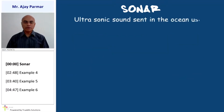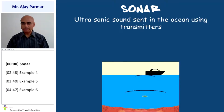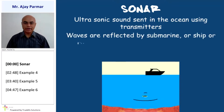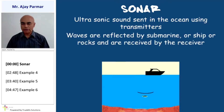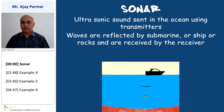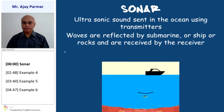The ultrasonic sound is sent into the ocean by using transmitters, and then when they get reflected — reflected by a submarine or whatever the object, the ship or sunken ship, rocks, or sometimes some animals — they are once again received by the receiver which is fitted in the given ship.